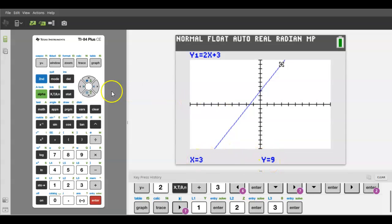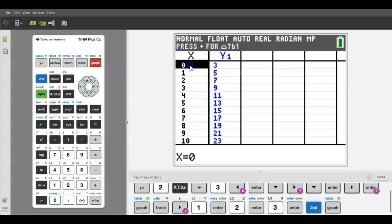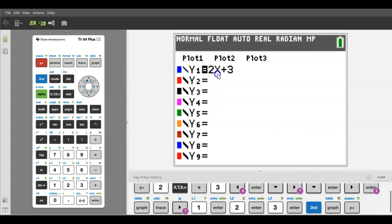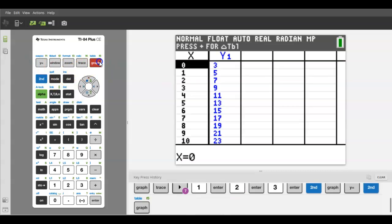Another place that you can see these values that are on the graph is in the table, which is up here in blue. That means you hit the second button and then graph, and you can see the table of values: zero three, one five, two seven, three nine. Let's say a teacher asks you to figure out f of x equals 2x plus 3 for a bunch of different x's. You can use your table feature to just have a list of them right there. You can scroll up to see negative numbers and scroll down to see positive numbers.